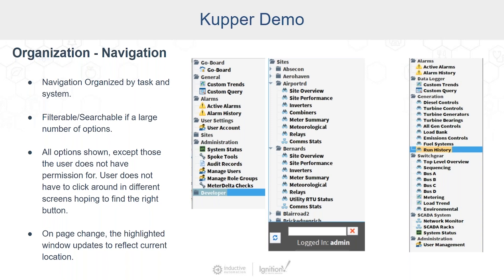To the right of that, we have a navigation tree for a large electrical system for a multi-tower apartment complex, which generates all of its own electricity isolated from the national grid. Here we see windows grouped into major areas including alarming, data logging, generation systems, and switchgear, which shows the electrical distribution system and power flows to buildings. We also have network and SCADA system monitoring.